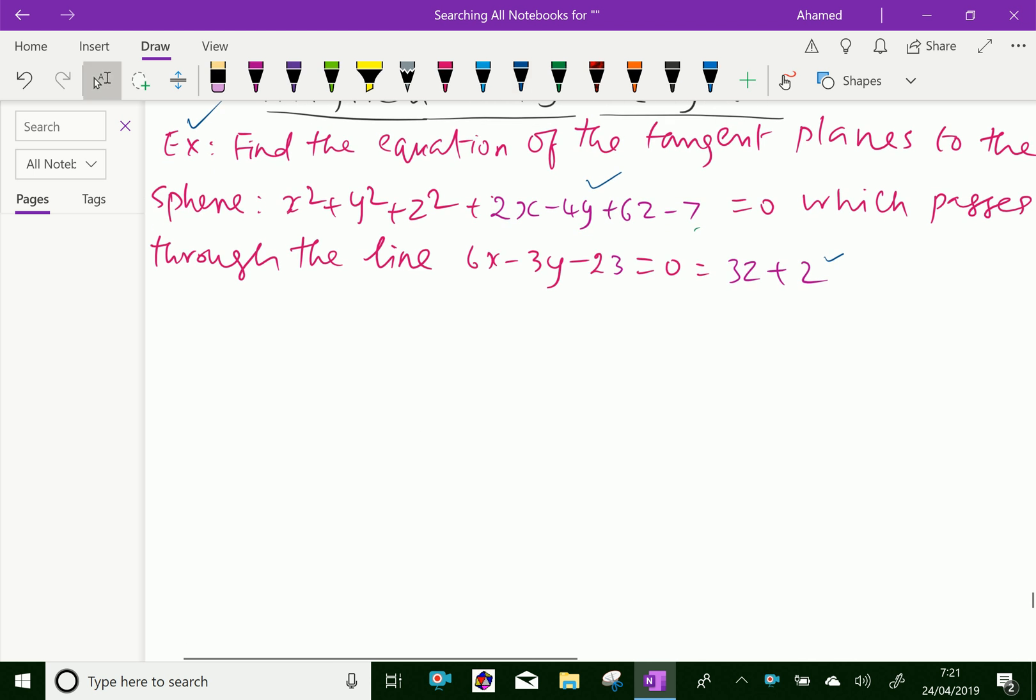Now, equation of plane through the line 6x - 3y - 23 = 0 = 3z + 2. That is, equation of the plane is 6x - 3y - 23 + k(3z + 2).